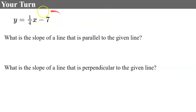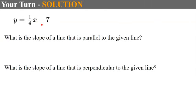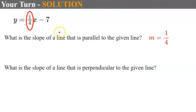Now it's your turn. Given y equals 1 fourth x subtract 7, find the slope of a line parallel to this line and the slope of a line perpendicular to it. The slope of a parallel line has the same slope: 1 fourth. The slope of a perpendicular line is the opposite reciprocal: the opposite of 1 fourth is negative, and the reciprocal of 1 fourth is 4, so the perpendicular slope is negative 4. We can verify: negative 4 times 1 fourth equals negative 1.